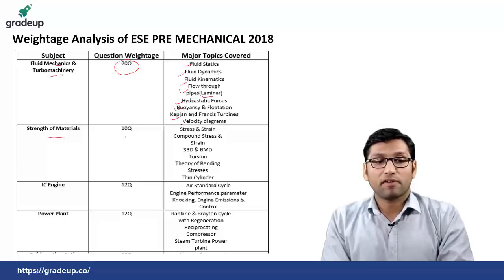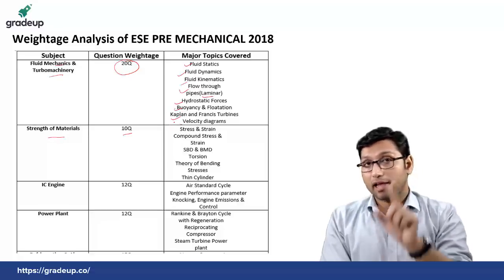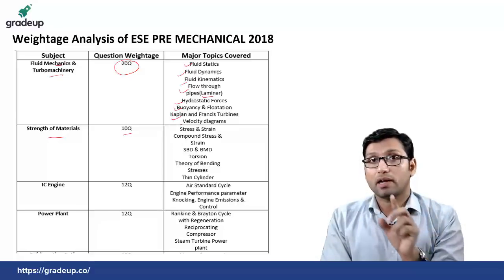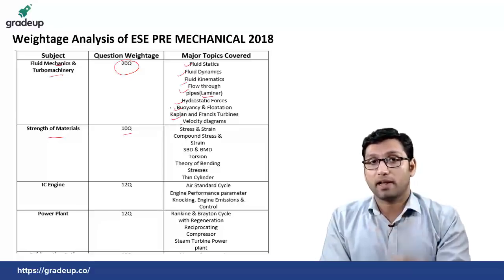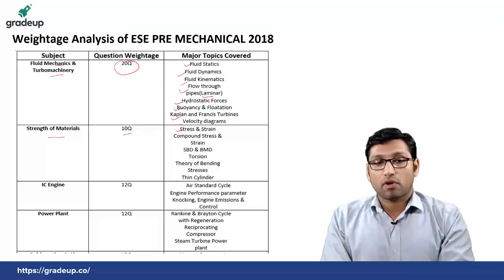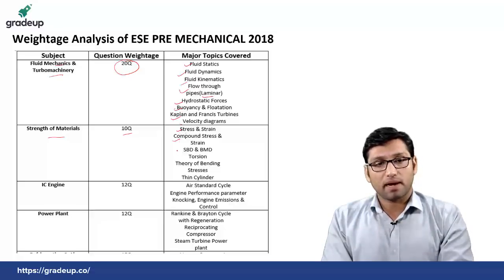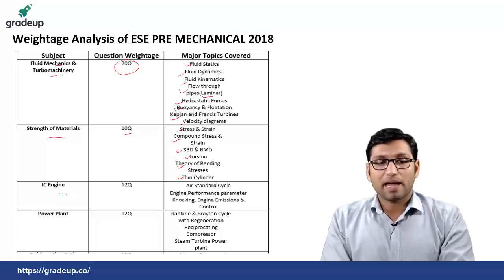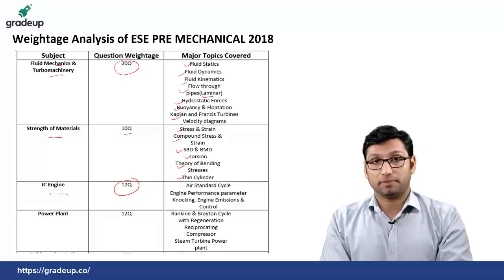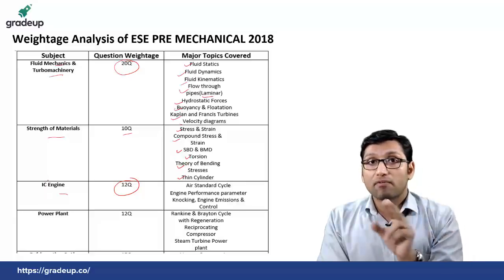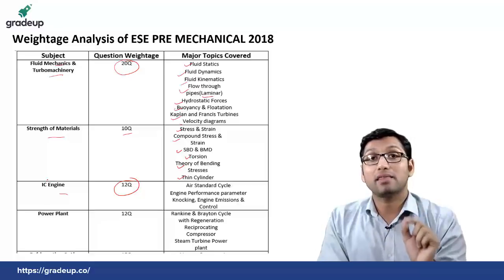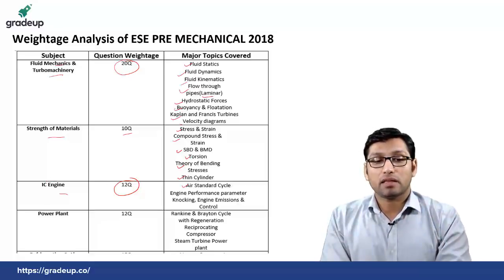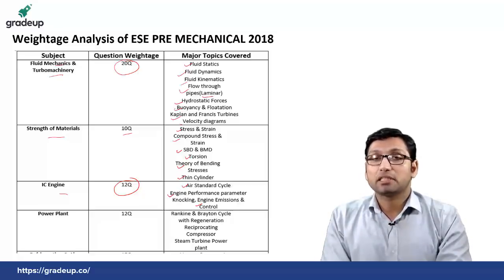From strength of material there were totaled 10 questions — same as 2017 — from the topics of stress and strain, compound stress and strain, shear force and bending moment diagram, torsion, theory of bending stresses and thin cylinder. From IC engine there were totaled 12 questions — compared to only 5 questions in 2017 — from the topic of standard cycle, engine performance parameter, knocking, and engine emissions and control.